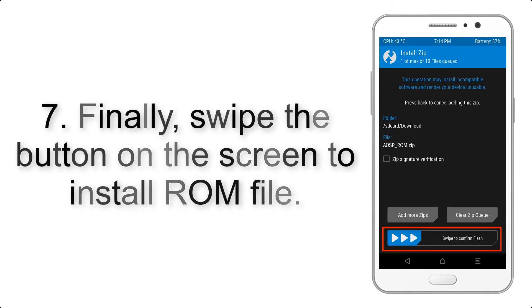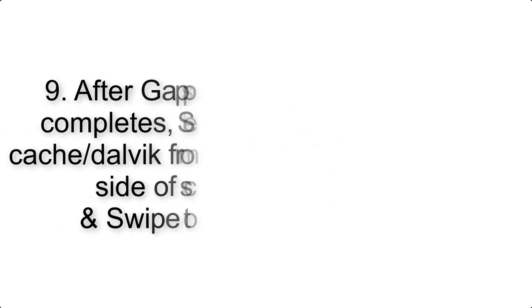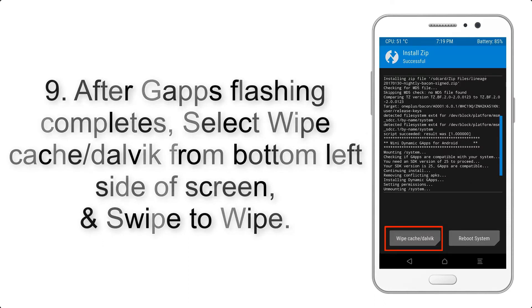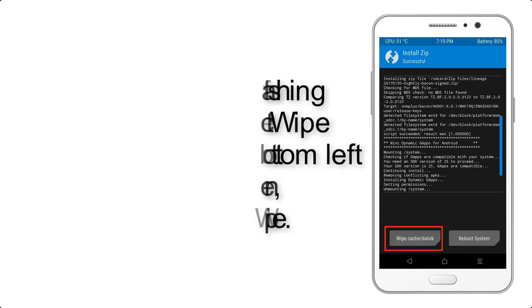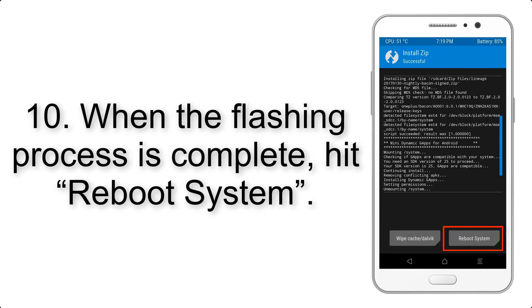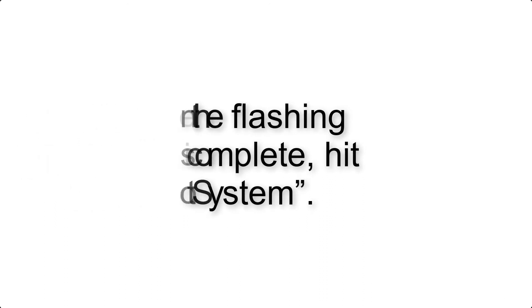Step 7: Swipe the button on the screen to install the ROM file. Step 9: After Gapps flashing completes, select Wipe Cache and Dalvik from the bottom left side of the screen and swipe to wipe. Step 10: When the flashing process is complete, hit Reboot System.